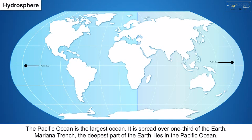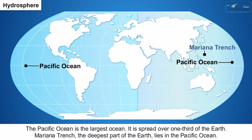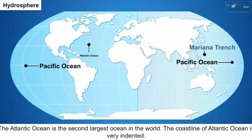1. The Pacific Ocean is the largest ocean, spread over one third of the Earth. The Mariana Trench, the deepest part of the Earth, lies in the Pacific Ocean.